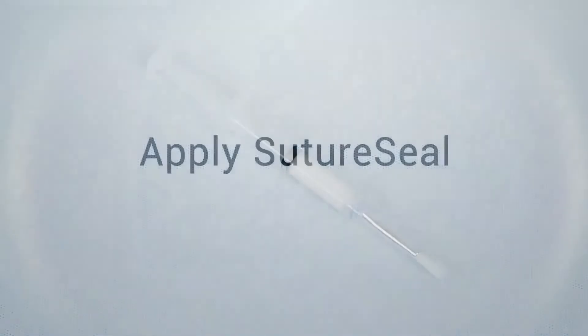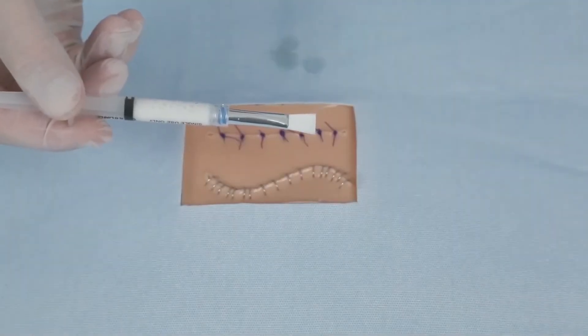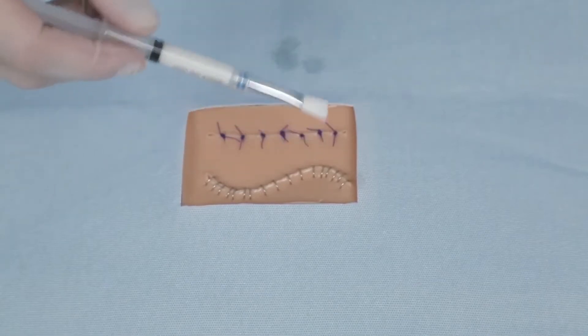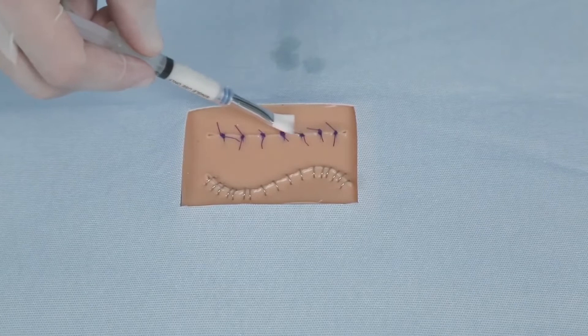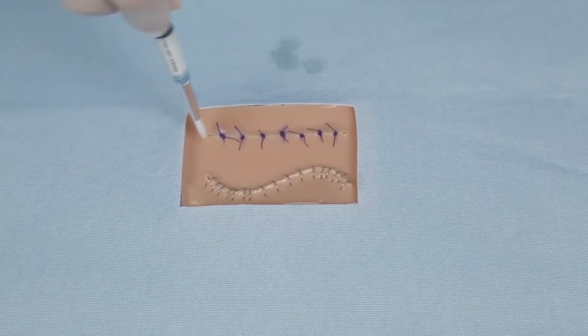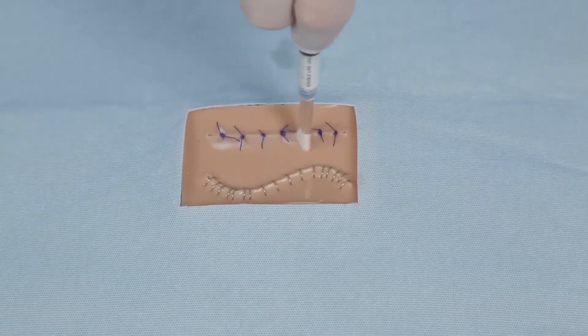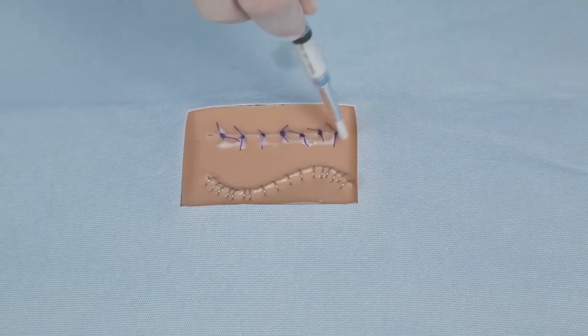The last step is to apply SutureSeal to the affected area. SutureSeal can be applied to incisions with sutures or staples and many types of open wounds. It is important to note that after the products are mixed you have approximately 80 to 120 seconds to apply SutureSeal to the incision or wound before it gels into a clear flexible sealant.